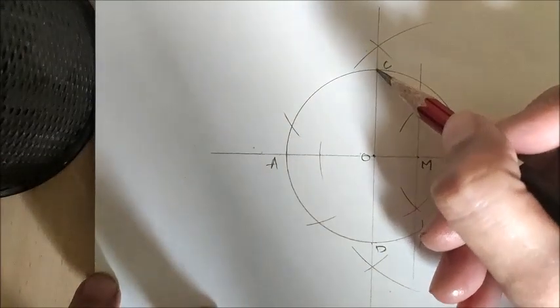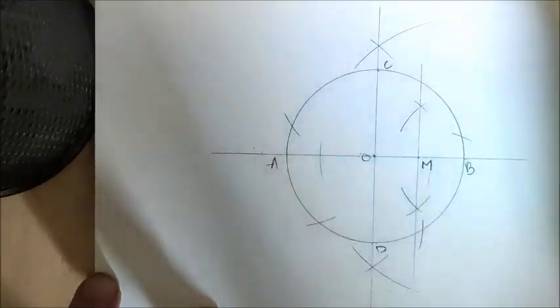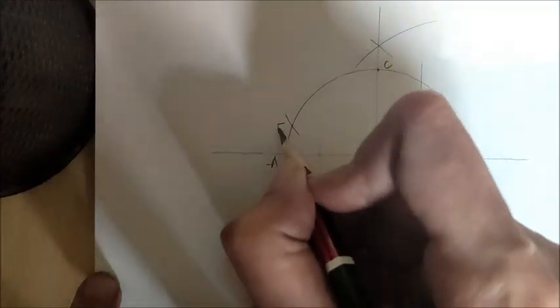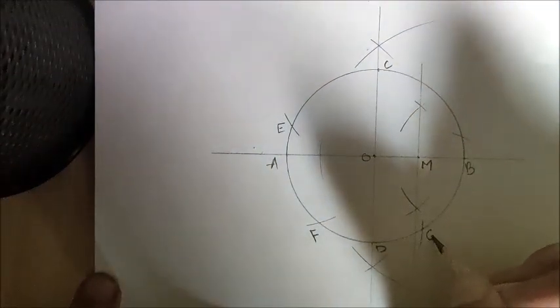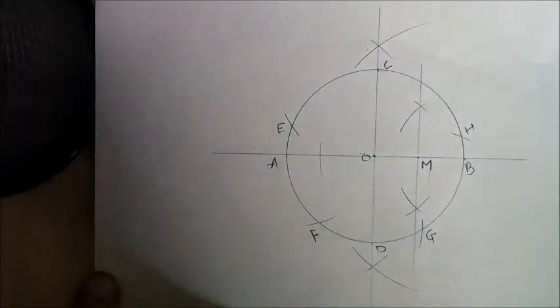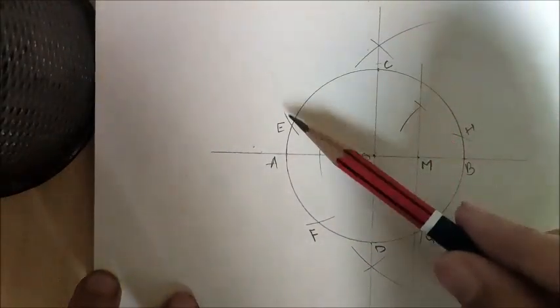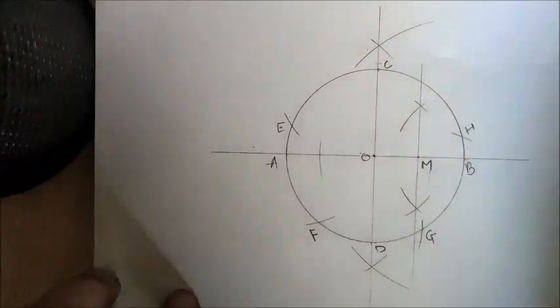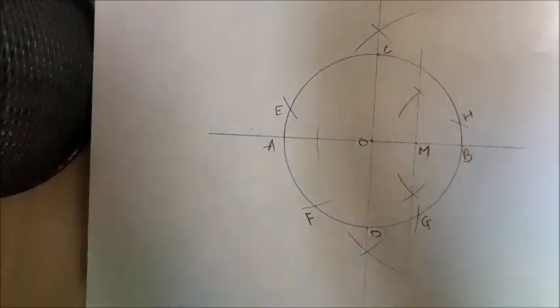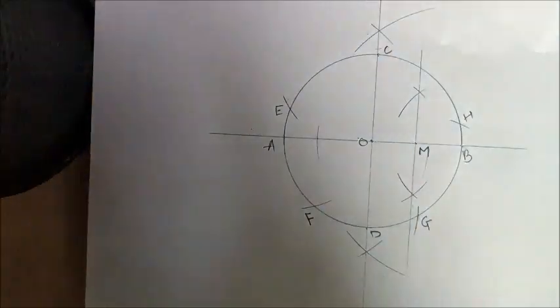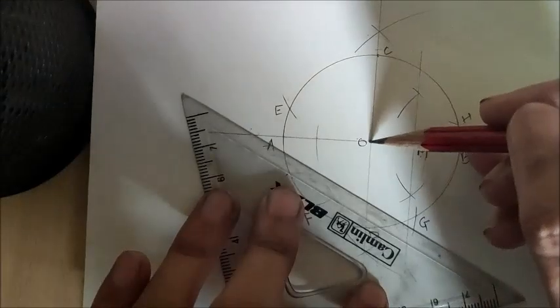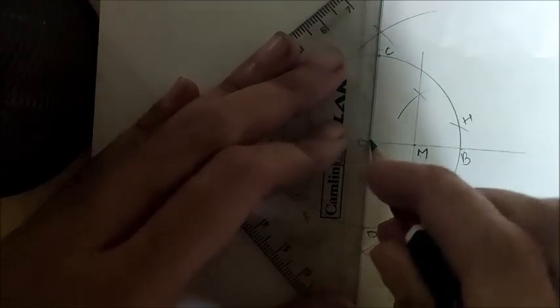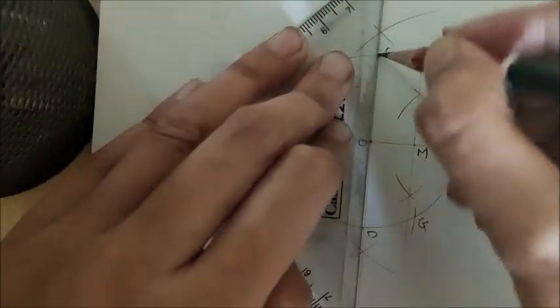We draw a total of four arcs from there. Now we have five points on the circle: C is the first point, then D, E, F, G, H — so C, E, F, G, H are the five points. To divide the circle into five equal parts, we join these points to the center O.